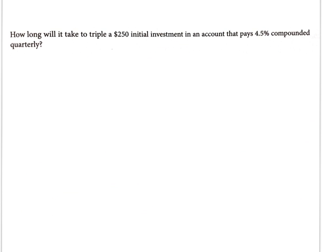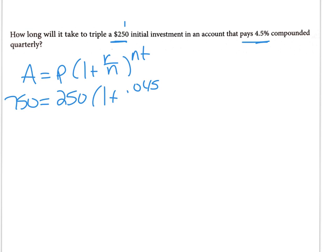Alright, one more here. I'm going to show you one interest problem because you're going to have some of these in your homework tomorrow. How long will it take to triple a $250 investment in an account that pays 4.5% compounded quarterly? Now you know our formula looks like this: the amount is the principal times 1 plus r over n to the nt power. Our initial investment is 250, that's what the p is. If it's going to triple that becomes 750. One plus r, r is 4.5%, change that to a decimal 0.045, compounded quarterly means divided by 4. n is 4, t I don't know, so I'm going to put the 4t up there.